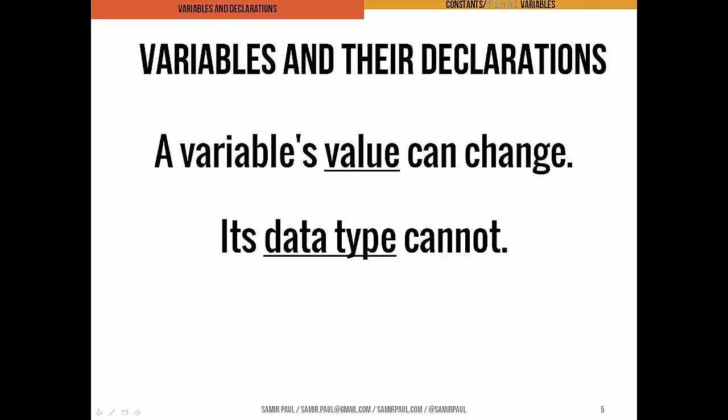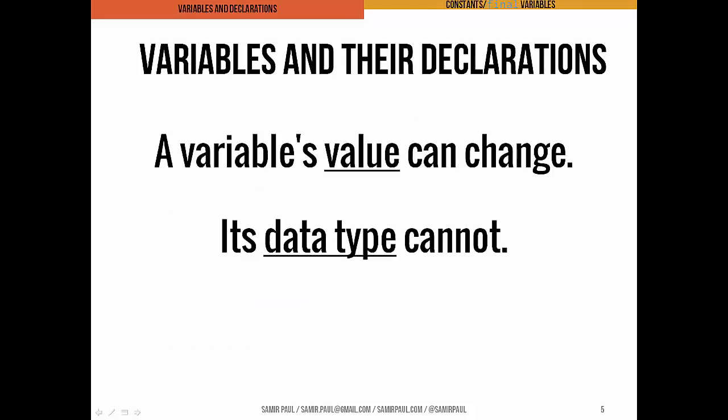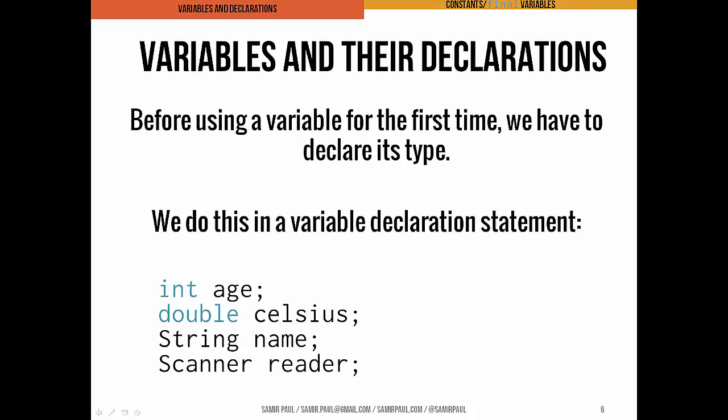Now, this is important. A variable's value in Java can change, but its data type can't. So that means that the variable Fahrenheit, which is a double, we can change the actual value stored in that double, but we can't change the fact that Fahrenheit is a double. That means Java is statically typed, and that means before the first time we use a variable, we have to actually declare what type it's going to be.